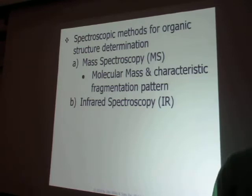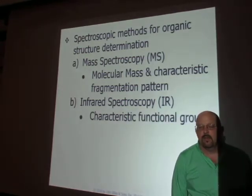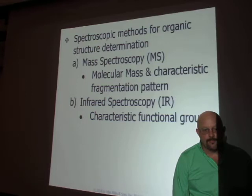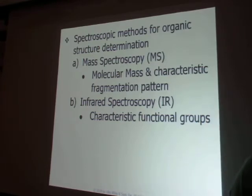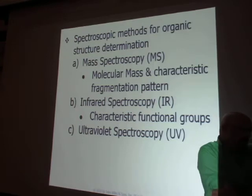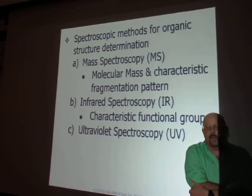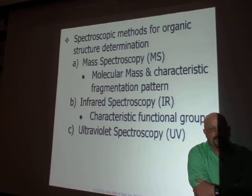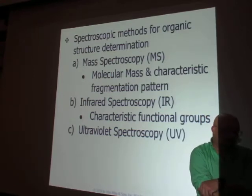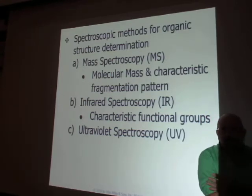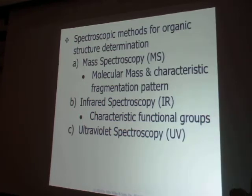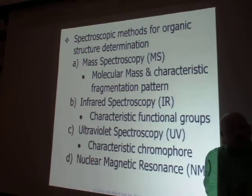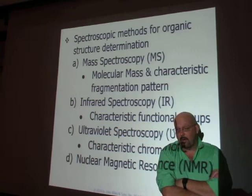From IR spectroscopy we can get functional groups. That helps — you'll know if you have an OH group or a carbonyl group, but you don't know which one. We've talked about UV-Vis spectroscopy in lecture; that tells you something about the conjugation within the molecule, kind of an idea of how much conjugation you have. But again, you have no idea of what the actual structure is. NMR will tell you the exact structure of your molecule — it gives us a lot more information.